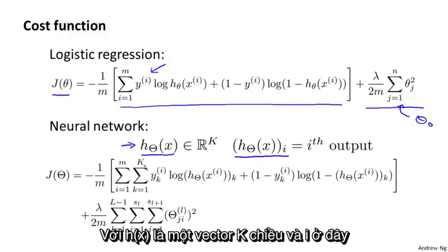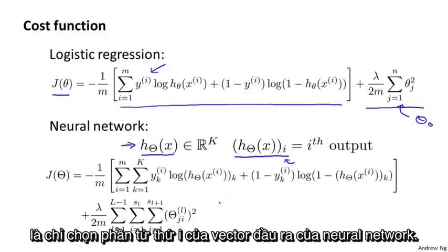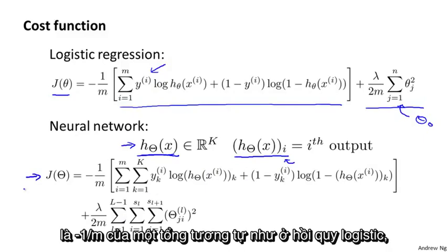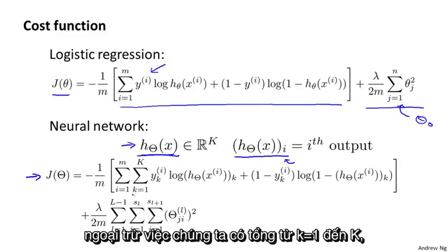That is, h(x) is a k-dimensional vector. And so this subscript i just selects out the i-th element of the vector that is output by my neural network. My cost function J(theta) is now going to be the following: minus one over m of a sum of a similar term to what we have for logistic regression, except that we have this sum from k equals one through K.